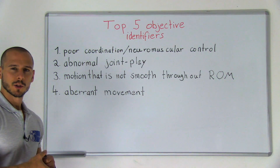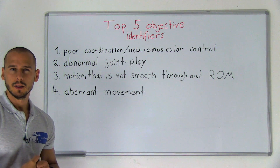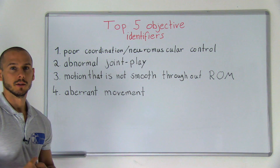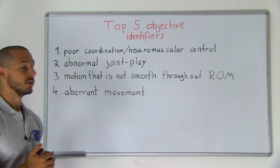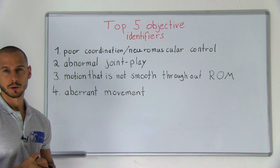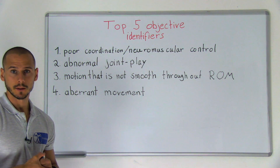Just like in lumbar spine instability, aberrant movement is another objective identifier — number four — of clinical cervical spine instability.